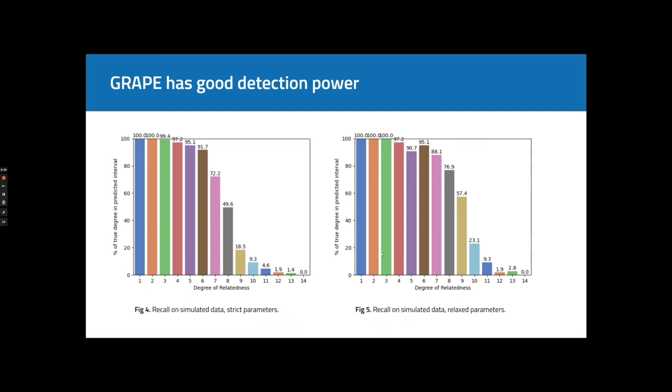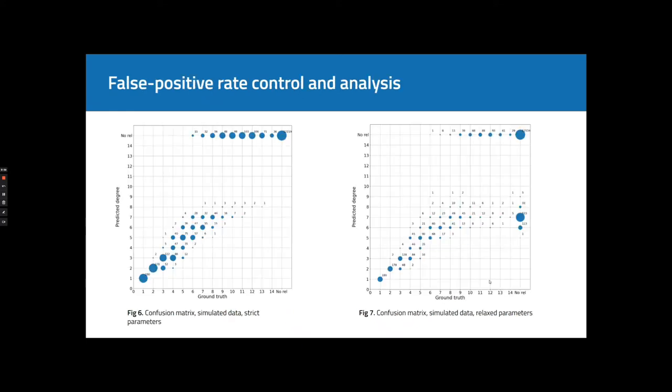On the right, we relax our parameters and get a higher recall for degrees from 7 to 11 with some decrease in precision. This decrease in precision can be seen here.